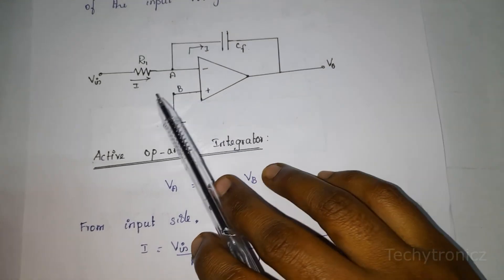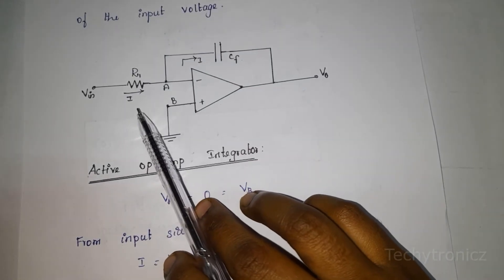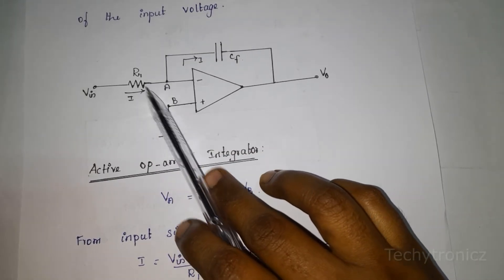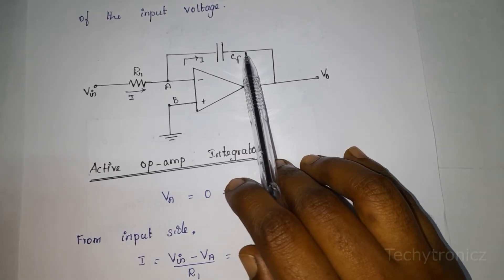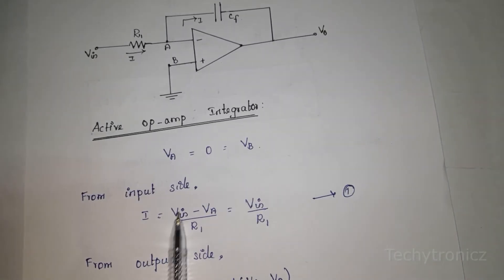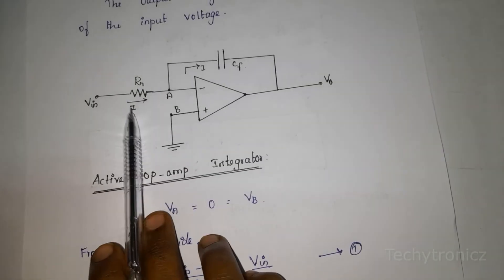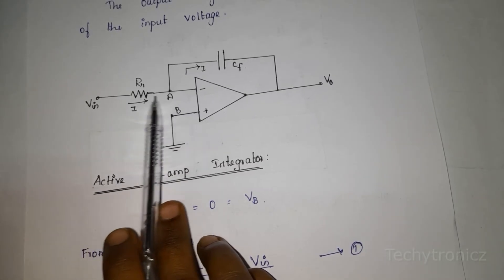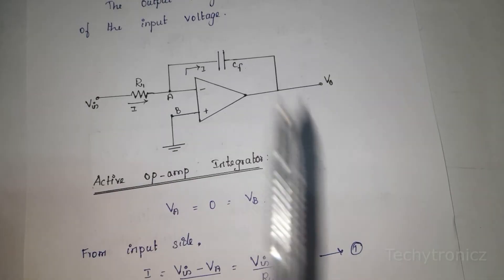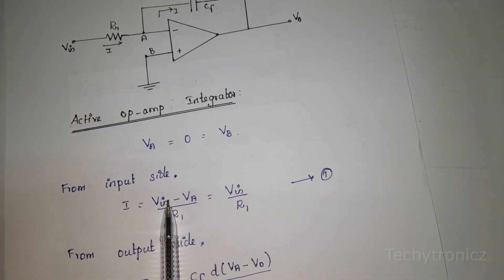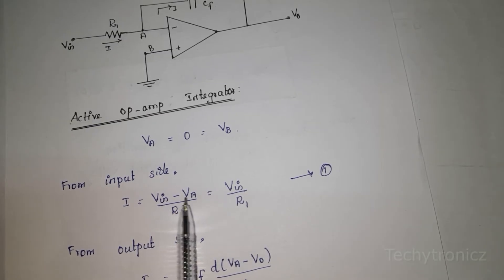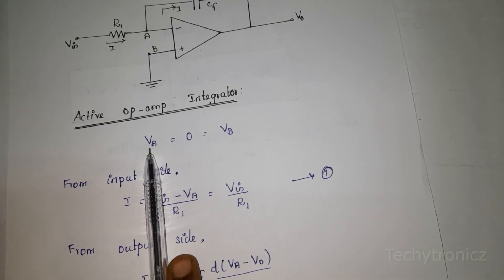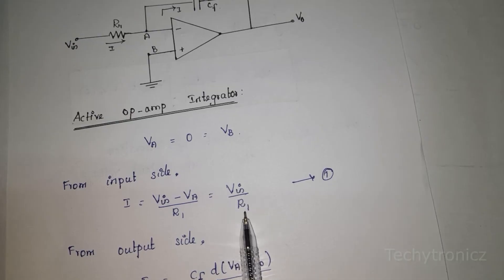We are going to calculate the current value. As the input current of the op amp is 0, the entire current I flows through R1 and also flows through capacitance CF. From the input side, I is flowing through R1 resistance. The potential difference is Vin minus VA. So by Ohm's law, I is equal to Vin minus VA divided by R1. Since VA is equal to 0, I equals Vin divided by R1.